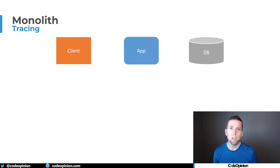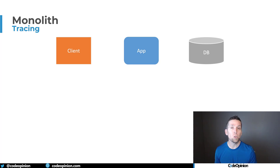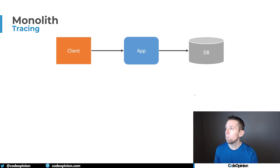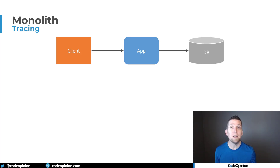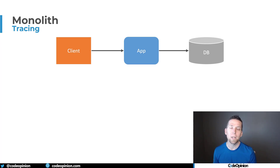So why do you need distributed tracing? You don't necessarily need it if you're working in a typical monolith where everything's deployed as a single unit — a single process. When our client makes a request to our application and we're interacting with a database, a cache, etc., we have complete visibility of that request because it's all within that single process.